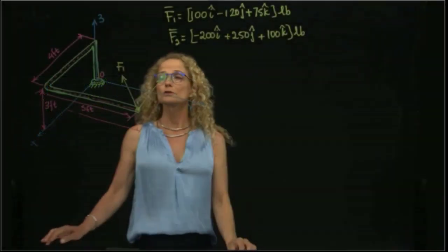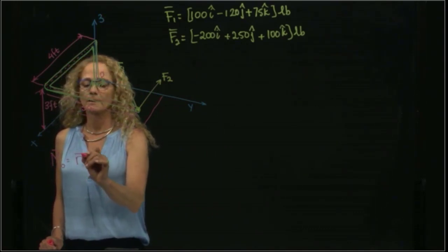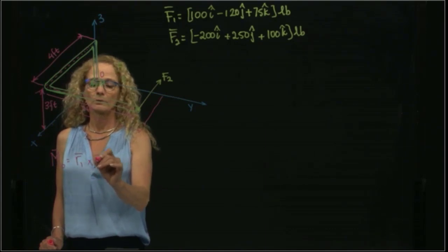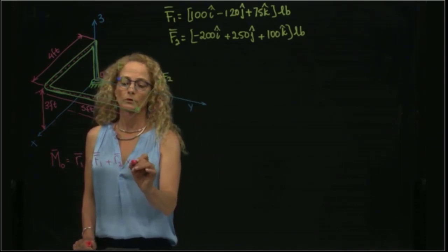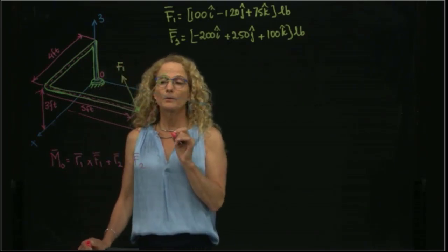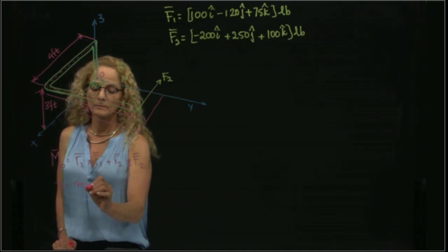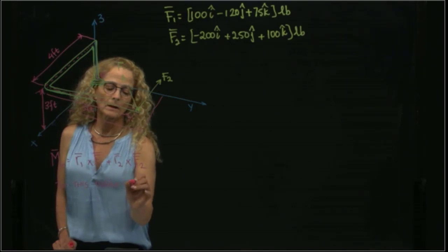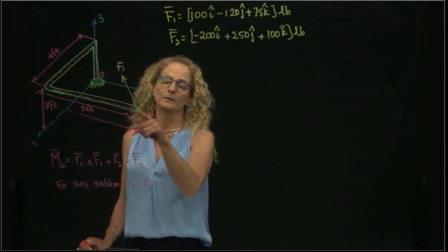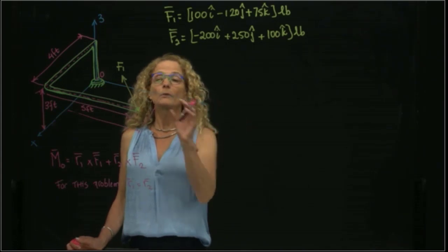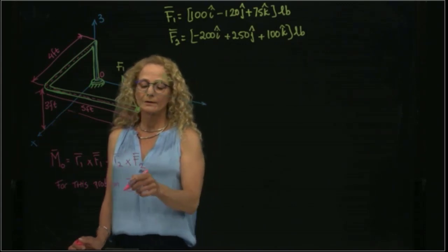The definition of moment with respect to any point will be equal to the distance to one force cross product the force, plus the distance to the other force cross product force 2. In this problem, R1 is equal to R2. You see that both forces are located at the same point.